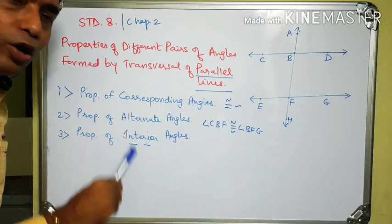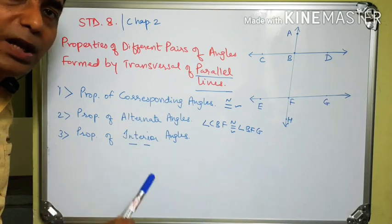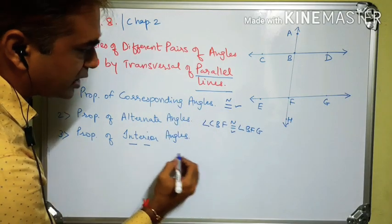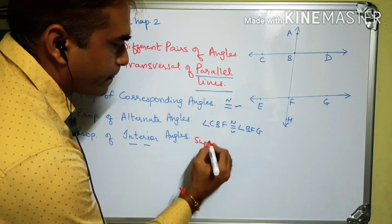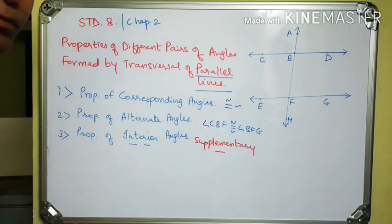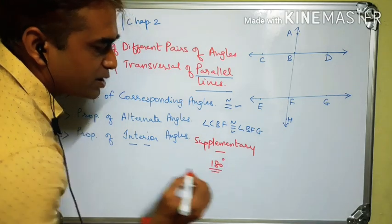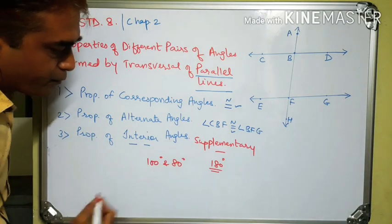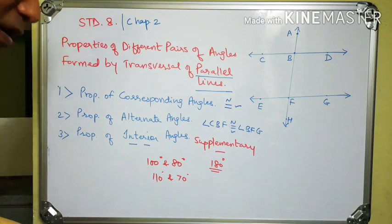The property of interior angles is that each pair of interior angles formed by two parallel lines and their transversal are supplementary. The corresponding and alternate angles are congruent, but interior angles are supplementary. Supplementary angles means two angles whose sum is 180 degrees — for example, 100° and 80°, or 110° and 70°.